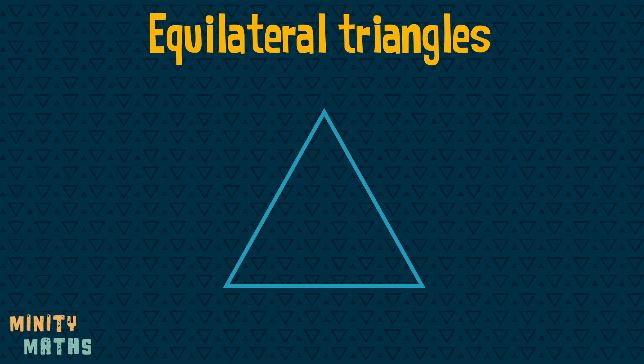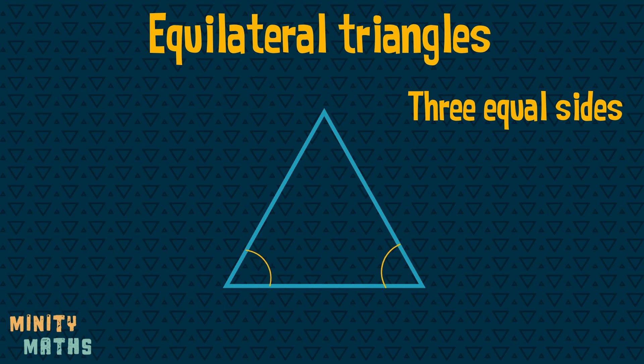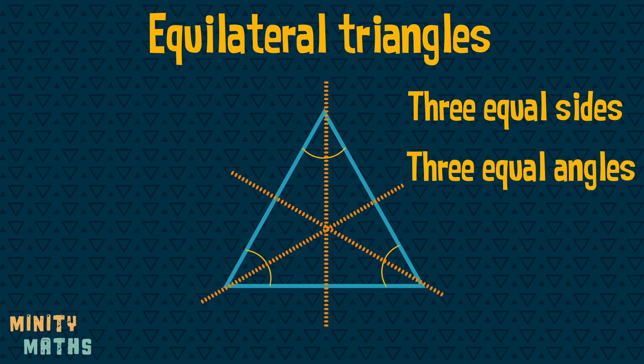Equilateral triangles have three equal sides, three equal angles, and three lines of symmetry.